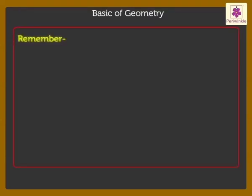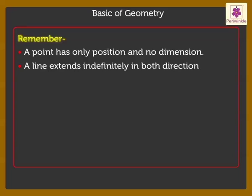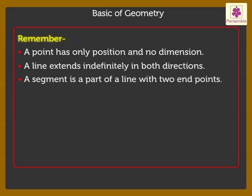Kids, remember: A point has only position and no dimension. A line extends indefinitely in both directions. A segment is a part of a line with two end points. A ray has one end point.